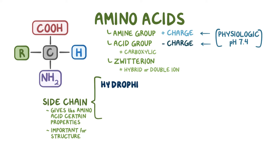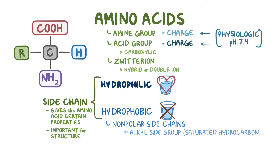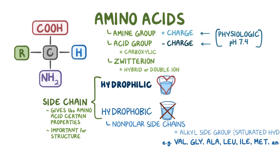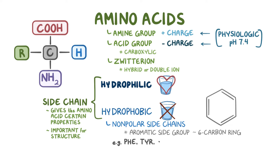The side chain can be hydrophilic or hydrophobic—water-loving or water-hating. Hydrophobic amino acids have nonpolar side chains. This might be in the form of an alkyl side group, which is a saturated hydrocarbon, seen in valine, glycine, alanine, leucine, isoleucine, methionine, and proline. Alternatively, it can be in the form of an aromatic side group, which involves a 6-carbon ring, like in phenylalanine, tyrosine, and tryptophan.